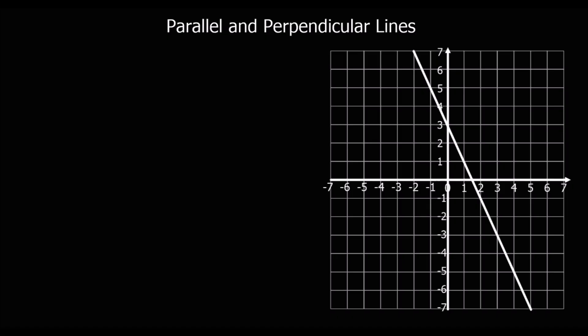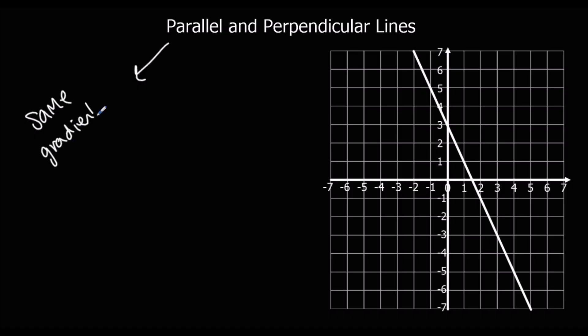This video is about parallel and perpendicular lines. Parallel lines are any lines of the same gradient. So if they've got the same gradient, they're going the same direction — they're parallel lines.